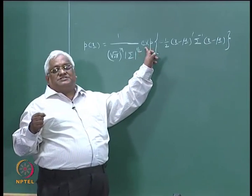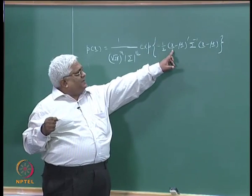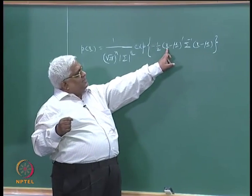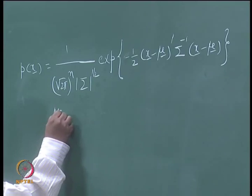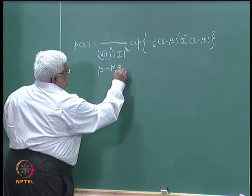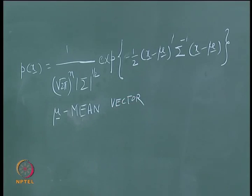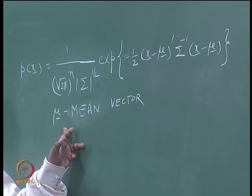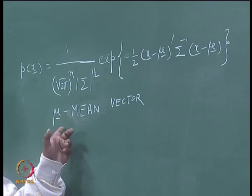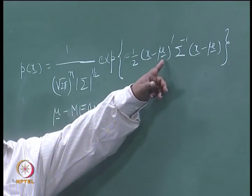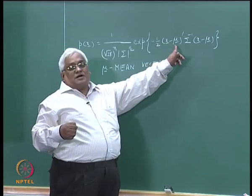The exponential means e to the power of something. Here, x is an n-dimensional vector. Mu is the mean vector — it represents the mean, or average, of the distribution, and is also an n-dimensional column vector. So when we write the transpose, they become row vectors, meaning this is going to be a 1 by n row vector.